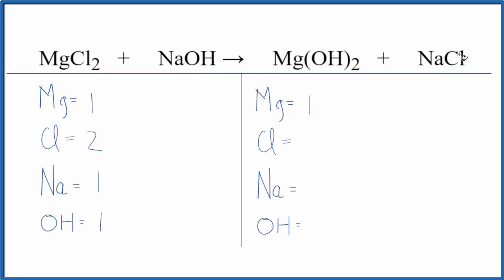Product side, I have one magnesium, one chlorine, and one sodium. And then I have two of these hydroxide ions. So I'll put a two here. So that makes it a lot neater. And I can see right away, I need to double my hydroxides and double my chlorines.